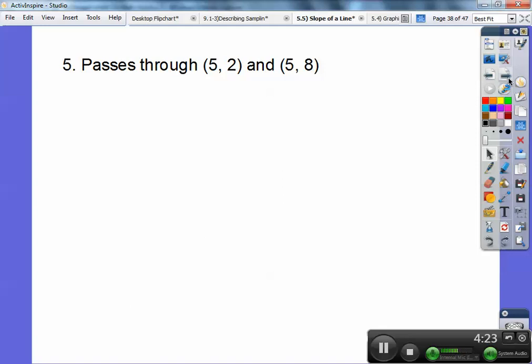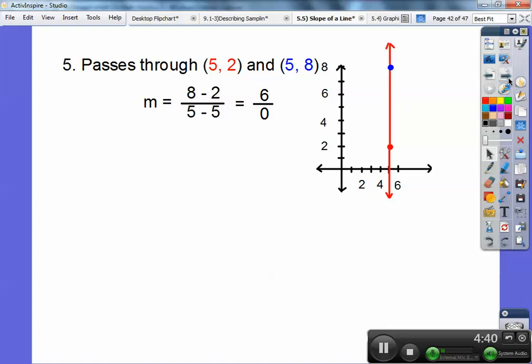This time it passes through (5, 2) and (5, 8). I'll do the slope formula: 8 minus 2 over 5 minus 5. I get 0 on the bottom. Let's graph those two points—there's (5, 2) and (5, 8). When I connect those, that makes a vertical line. Vertical lines have undefined slope. If 0 is on the bottom, treat it like a basketball. There's no way you can put a table on top of a basketball—it would fall over. That's how I remember it's undefined.